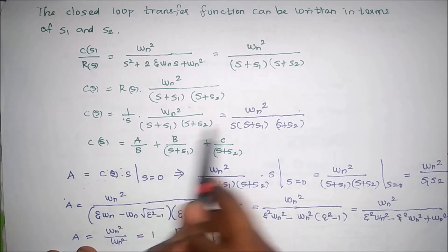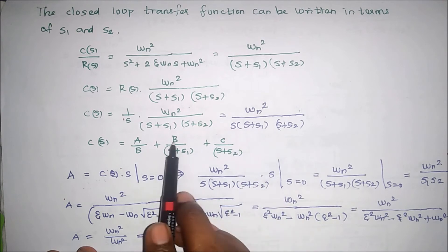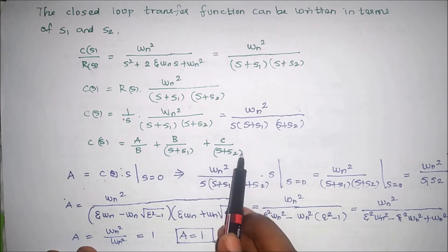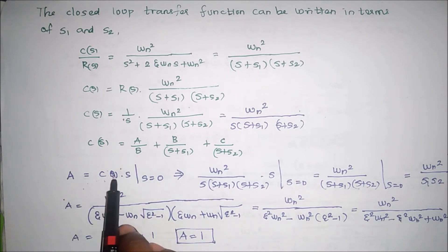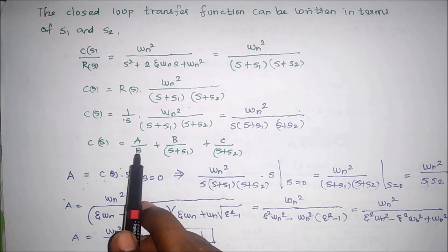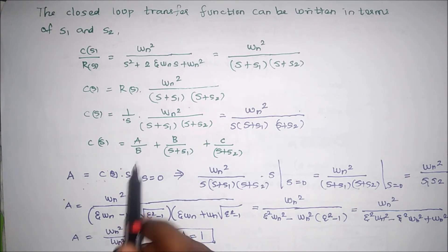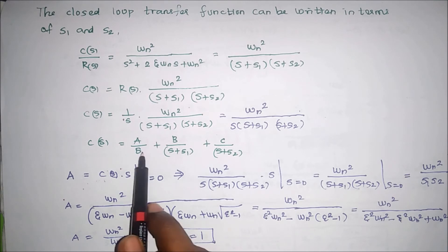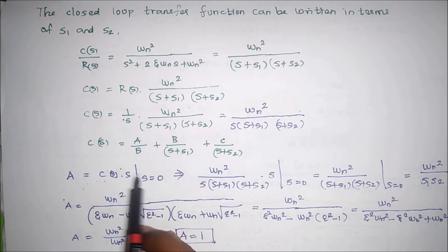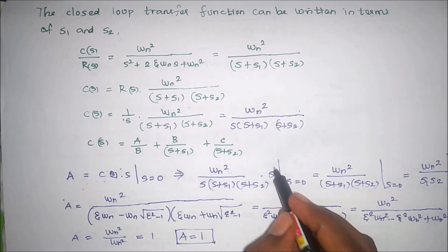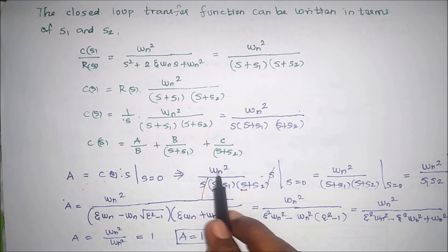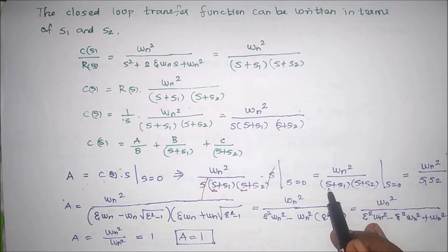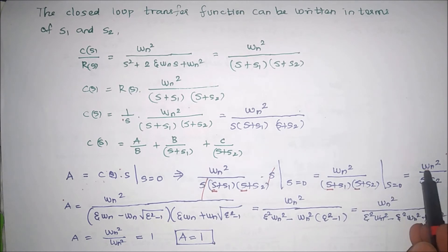The partial fraction expansion will be: A divided by s, plus B divided by (s + s1), plus C divided by (s + s2). According to partial fraction theory, A equals C(s) multiplied by s, then setting s equal to 0. After cancellation, substituting s equals 0 gives omega_n squared divided by s1 times s2. This is the value of A.